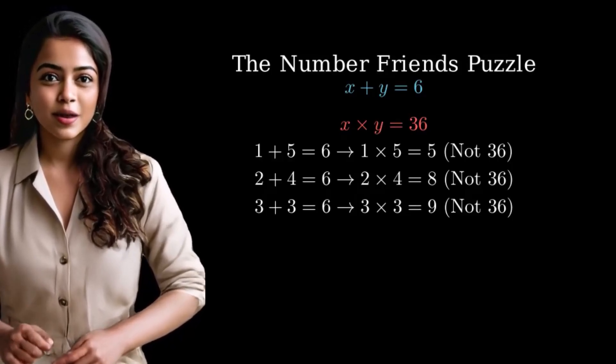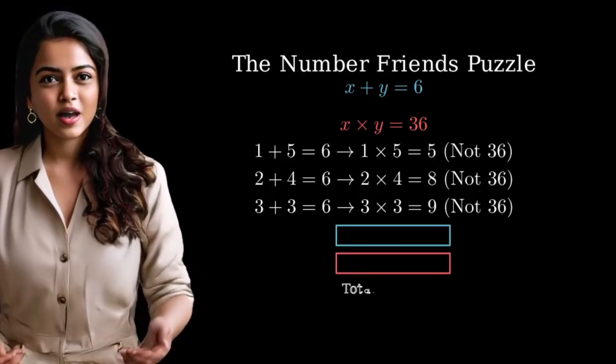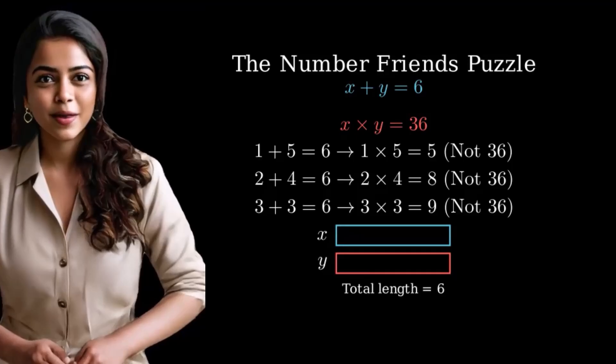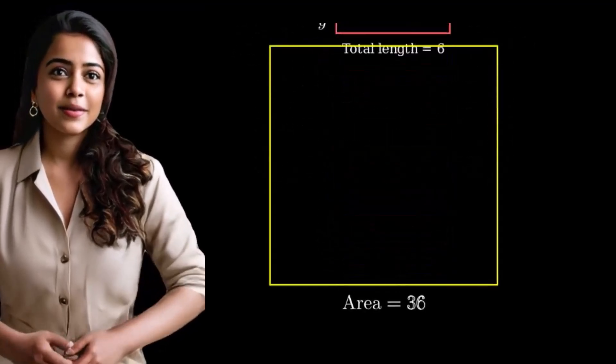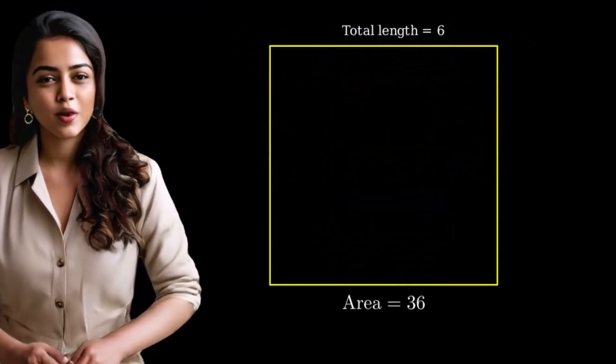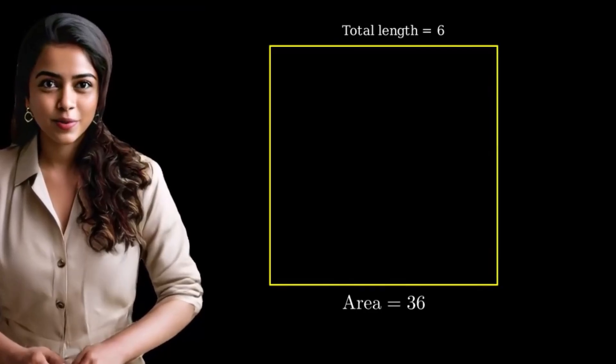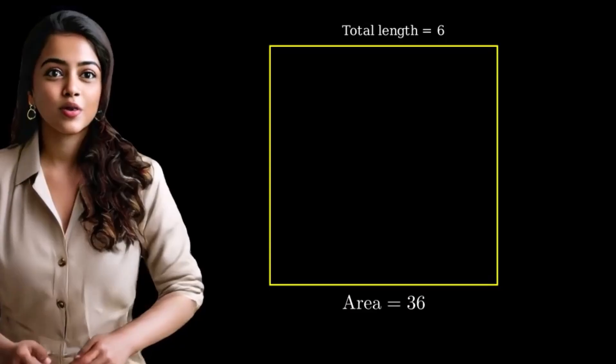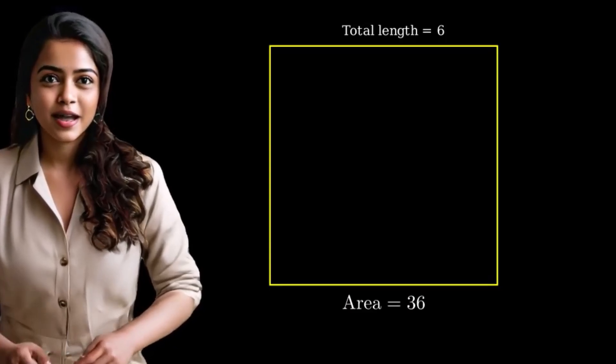Let's try to understand this visually. Imagine we have two bars that add up to 6. These represent our numbers x and y. Now when we multiply x and y, it's like making a rectangle where x is the length and y is the width. This rectangle needs to have an area of 36. Here's why this is tricky.